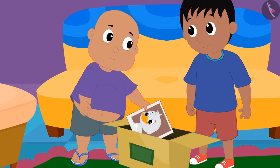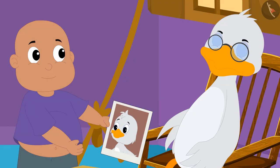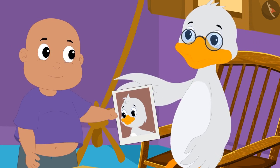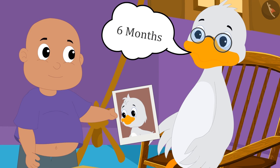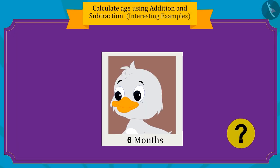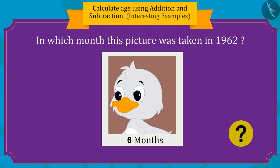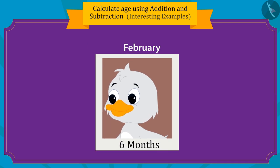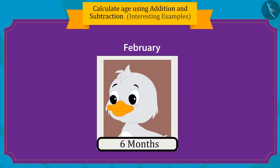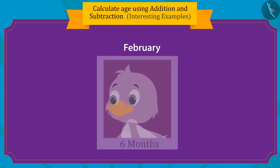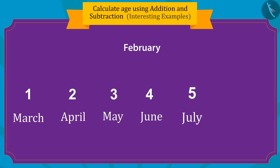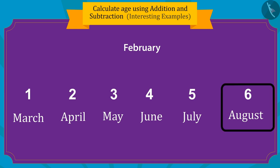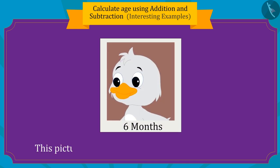Now Bablu found a picture of uncle's childhood. When Bablu asked uncle, it was revealed that uncle was only 6 months old in this picture. Children, can you tell us in which month this picture was taken in 1962? Uncle was born in February, so this picture was taken 6 months from February. The month that comes 6 months after February is August. So this picture was taken in the month of August in 1962.